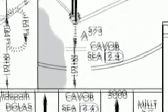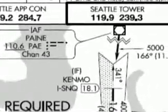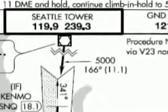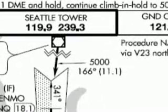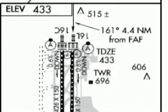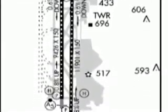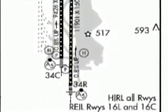Initial approach fix: PAIN is an example of an initial approach fix, and it's the most likely point that you would use if you were approaching from the north. Notice the 5,000 — this is the altitude that you should be at when flying this approach. The airport symbol is probably obvious to you — it's the runways of the airport. The small drawing indicates a simplified sketch of the airfield and its orientation relative to the approach route.